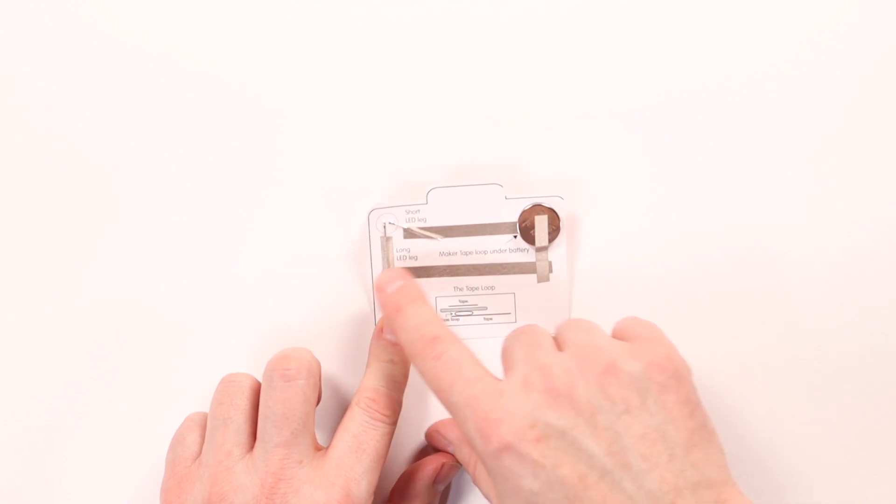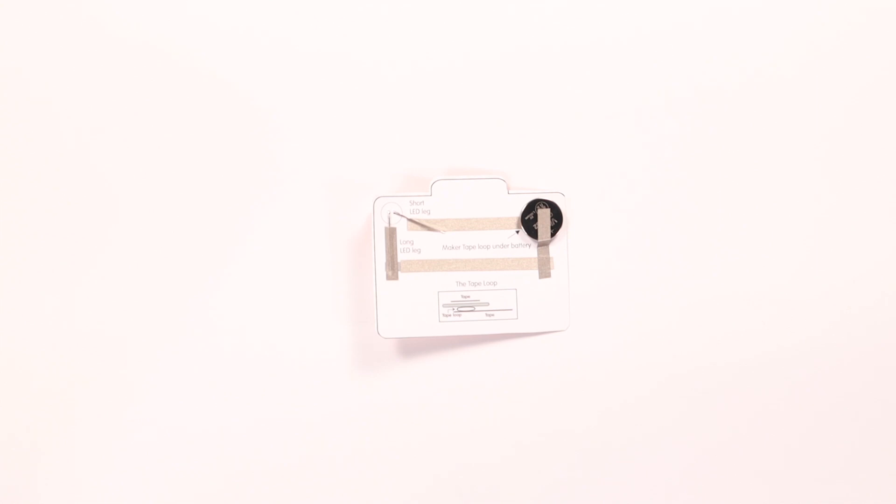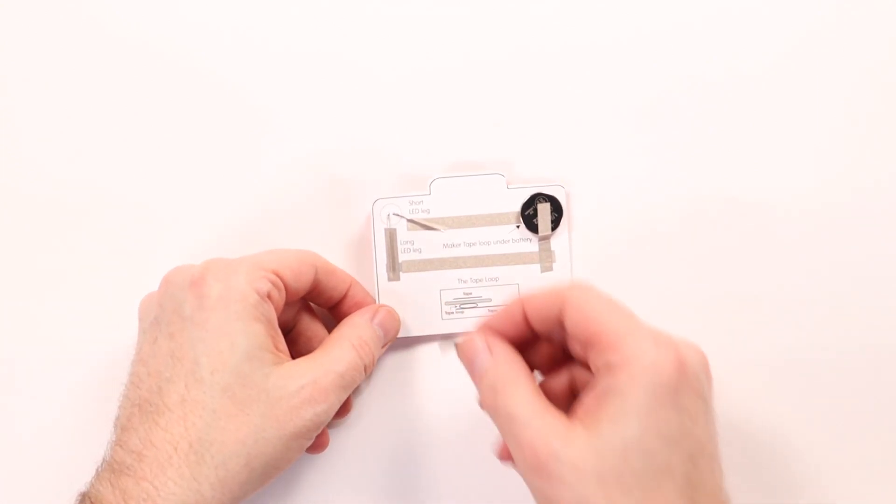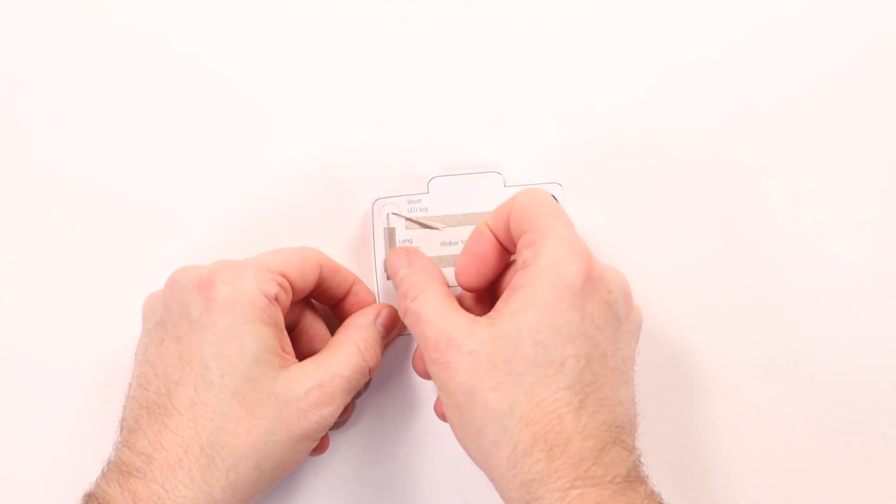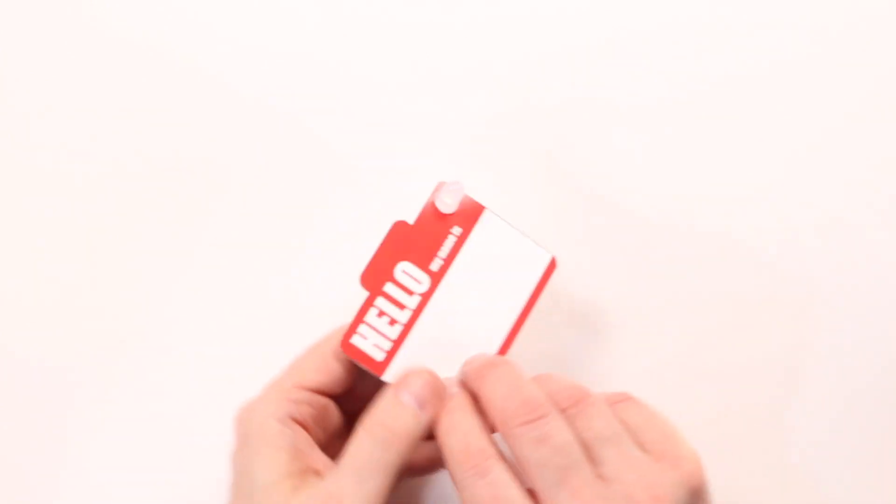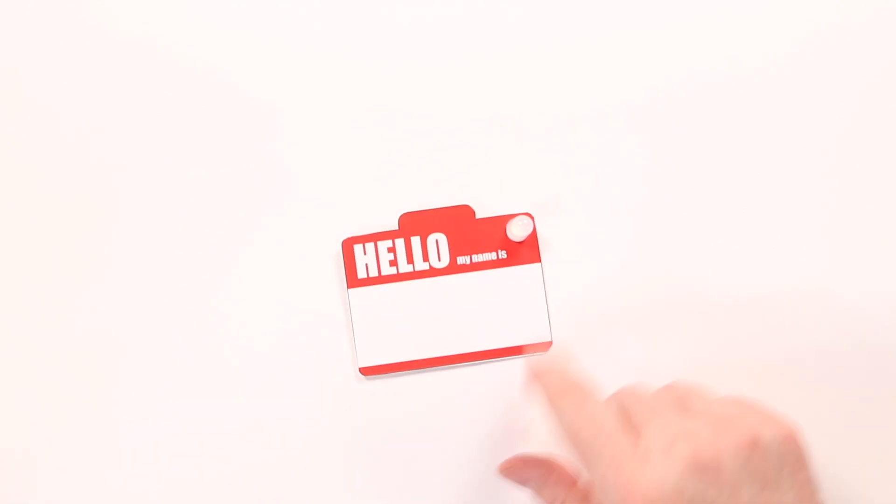There is a small gap right here. So these pieces of tape, B and C, are not touching. So we have an open circuit. So let's fix that. So we can easily fix this by just adding a small piece of tape right here to close up that gap. And once we do that, our LED lights up.